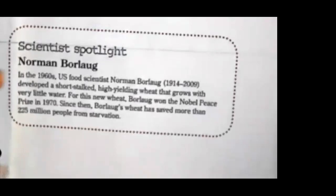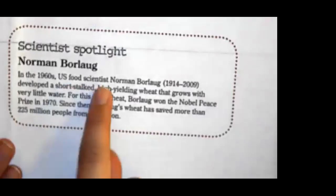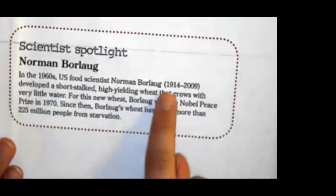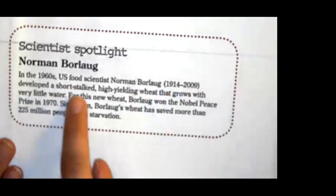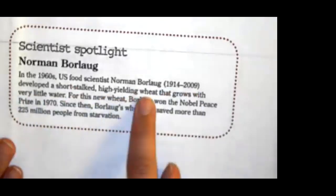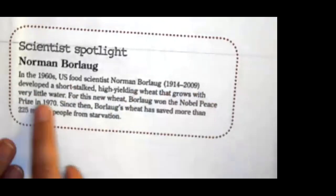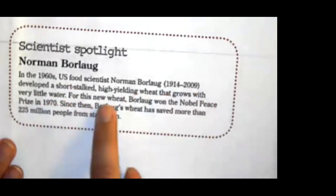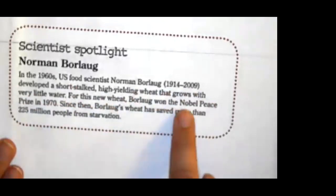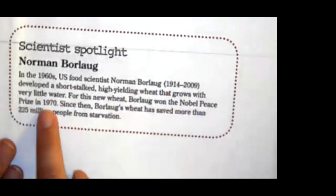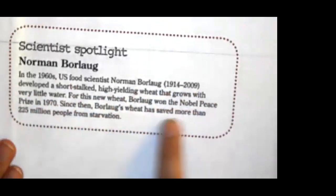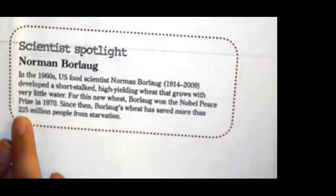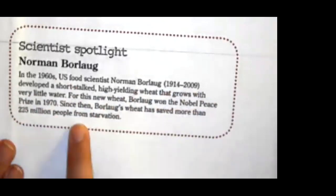Scientist spotlight: Norman Borlaug. In the 1960s, US food scientist Norman Borlaug (1914–2009) developed a short-stalked, high-yielding wheat that grows with very little water. For this new wheat, Borlaug won the Nobel Peace Prize in 1970. Since then, Borlaug's wheat has saved more than 225 million people from starvation.